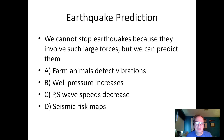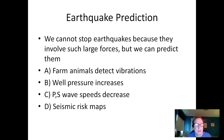The question is: can we stop earthquakes? That would be great — think of all the damage done and all the people killed — but unfortunately, we can't. The forces involved are just too great. Some people have tried to predict earthquakes, and here are some of the methods they've come up with. For example, some people notice that farm animals can detect the vibrations and will start acting very strangely. Just prior to the Oakland quake, some people noticed that horses were behaving unusually.